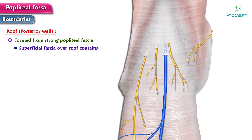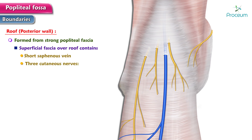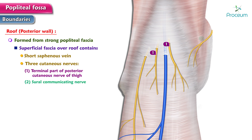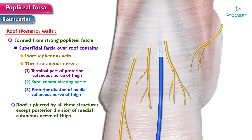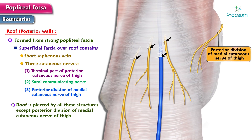The superficial fascia or the roof contains the short saphenous vein and three cutaneous nerves: the terminal part of the posterior cutaneous nerve of the thigh, the posterior division of the medial cutaneous nerve of the thigh, and the sural communicating nerve. The roof is pierced by all these structures except the posterior division of the medial cutaneous nerve of the thigh.